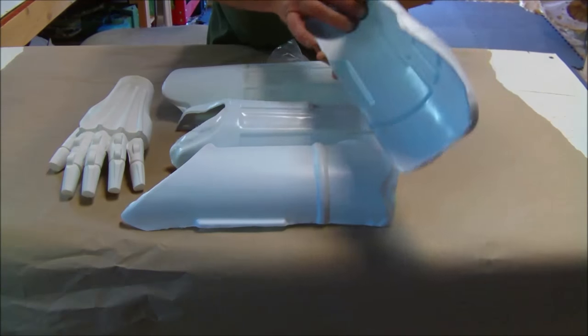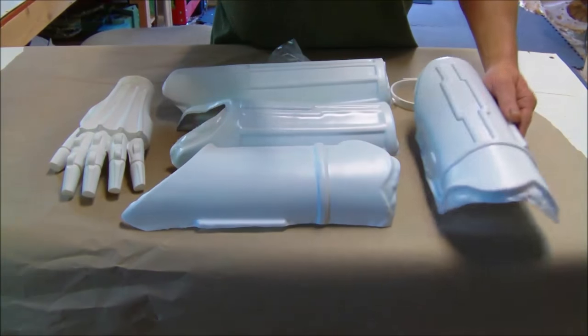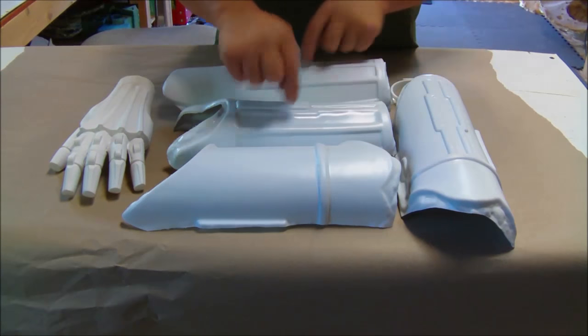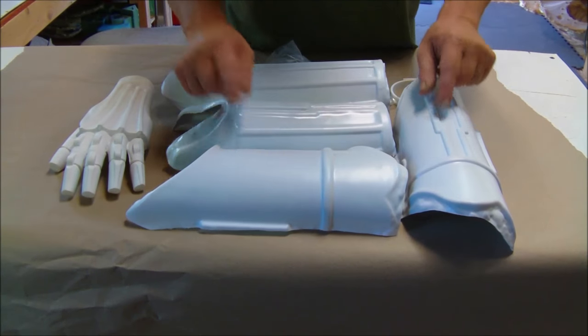So we have thermal formed shells. It's half the forearm, these two parts, and then half the bicep, these two parts.